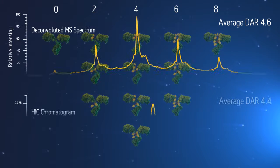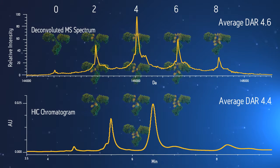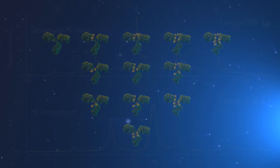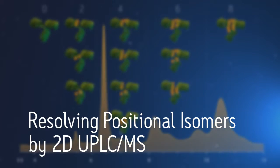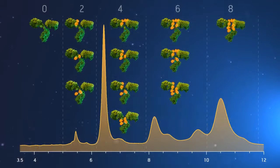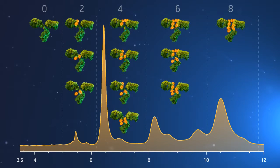DAR can also be calculated from HIC data, providing orthogonal confirmation of the drug loading. With an online 2D UPLC-MS system, scientists can select a specific peak or peaks from an initial HIC separation for a second reversed-phase LC-MS analysis.